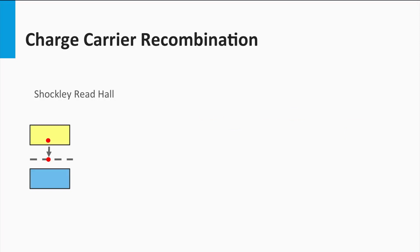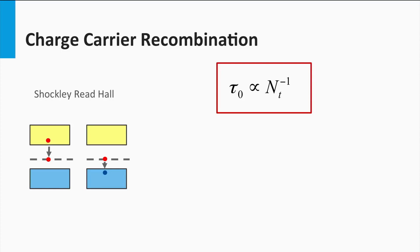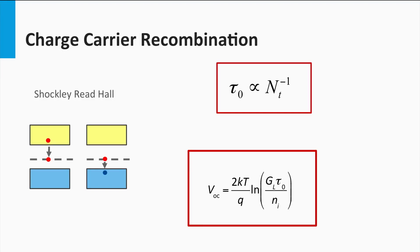Let's start with Shockley-Reed-Hall recombination. The origin of this mechanism is the trapping of the mobile electron at defects that have an energy state in the bandgap. The electron is trapped until a mobile hole finds the electron, after which both charge carriers recombine. Shockley-Reed-Hall recombination depends logically on the defect density. In the simplest approximation, the minority charge carrier lifetime is reciprocally dependent on the defect density N_T. This means the larger the defect density, the shorter the lifetime and the smaller the open-circuit voltage. The defect density limits the extent to which the quasi-Fermi levels can be split.